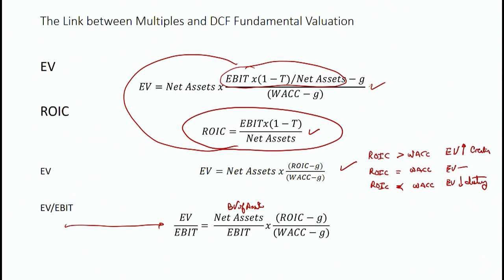If you didn't do anything better than just create book value divided by EBIT, this captures the effects of growth and the relationship between return on invested capital and weighted average cost of capital.